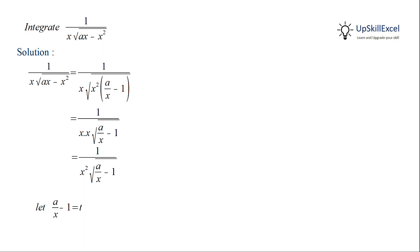We let t equal a over x minus 1. Differentiating both sides gives minus a over x squared dx equals dt. Rearranging, we get dx over x squared equals minus 1 over a dt.